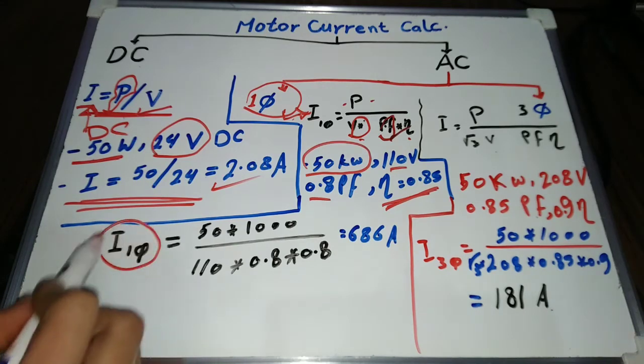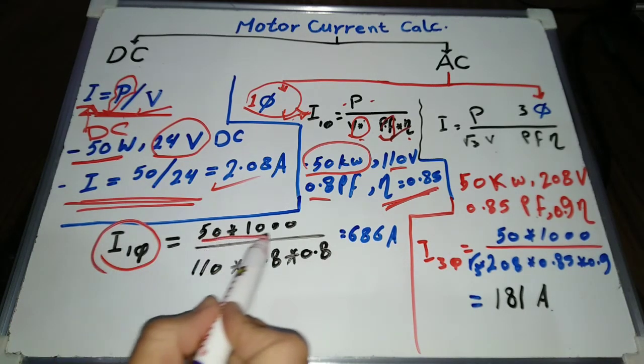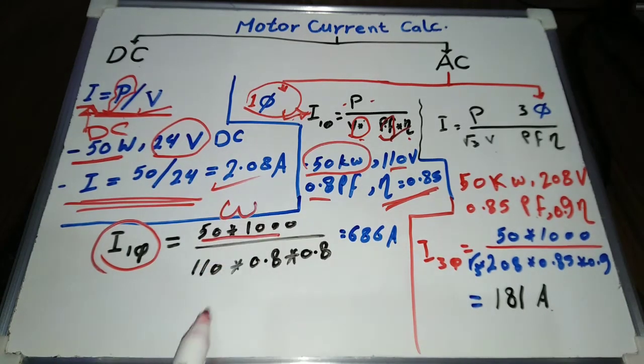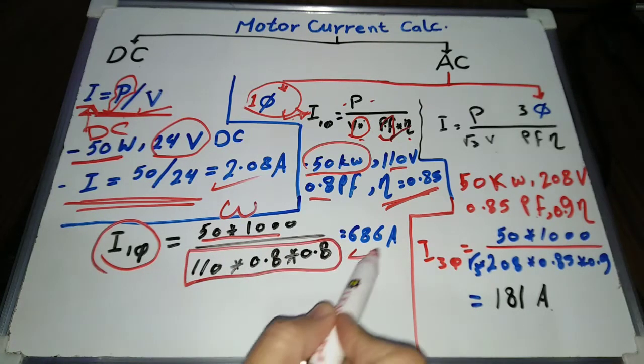Motor current equals 50 times 1000 divided by 110 times 0.8 times 0.85, equals 686 amps.